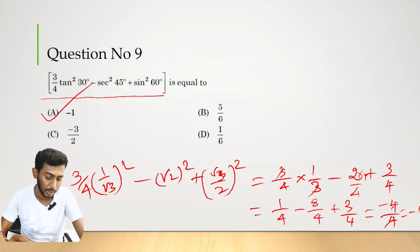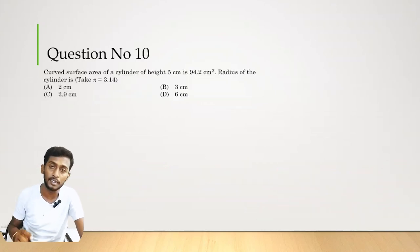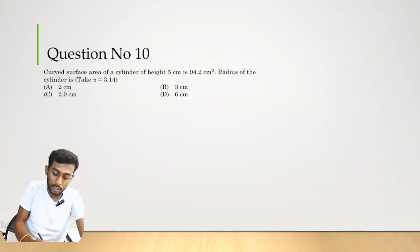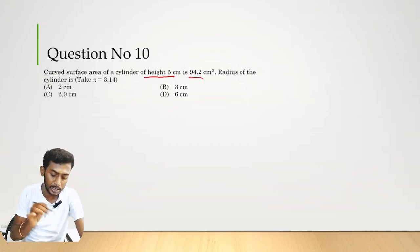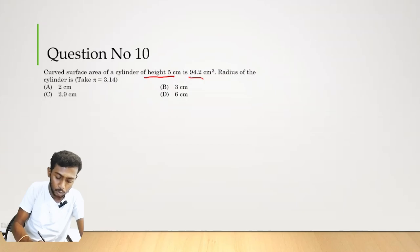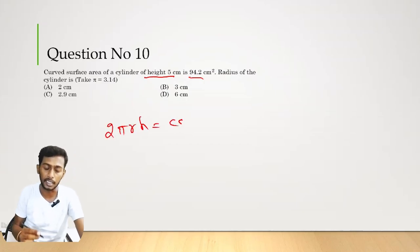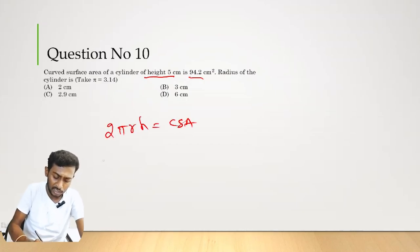Question number 10. Curved surface area of a cylinder with height 5 cm and CSA 94.2. Using CSA formula 2πrh = 94.2, substituting 2 × (22/7) × r × 5, solve for radius.